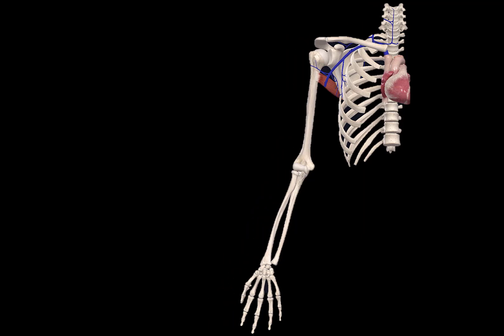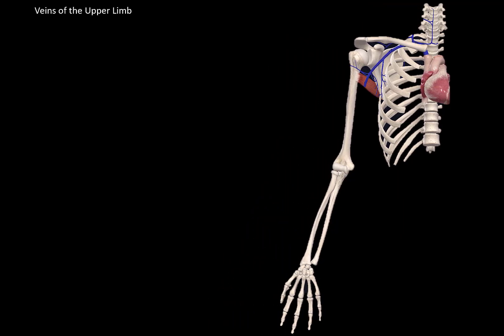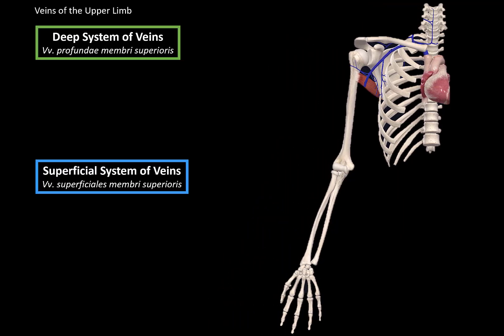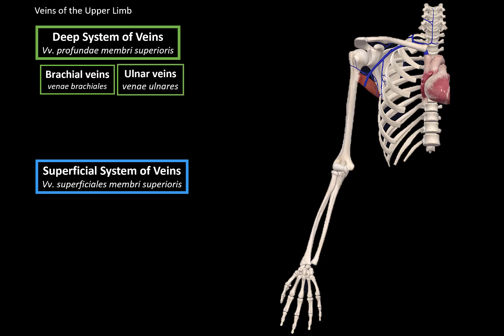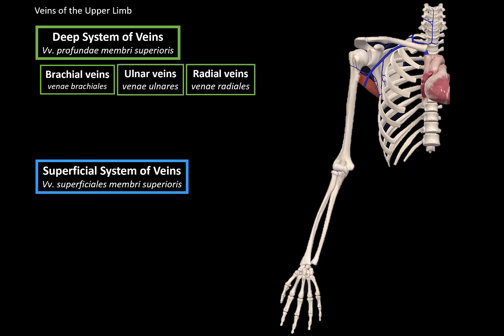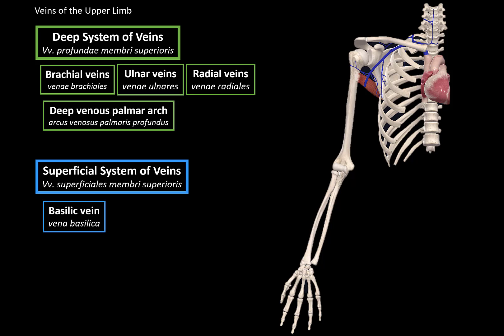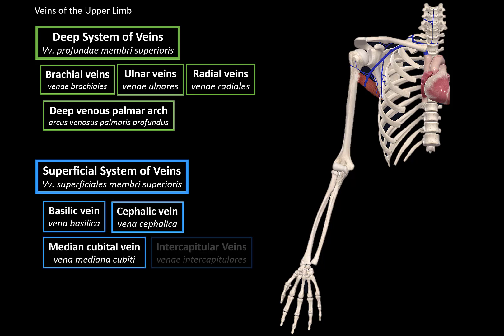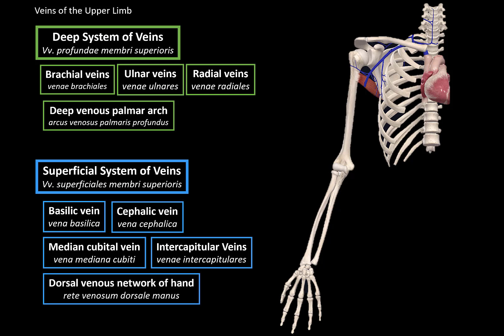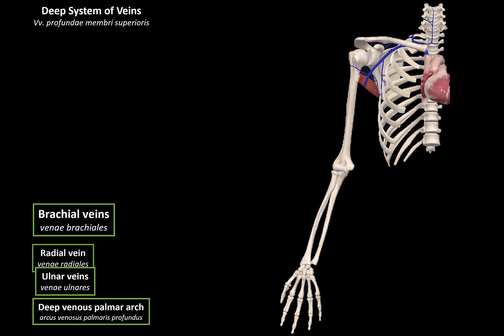The veins of the upper limb form two systems: the deep system of veins and the superficial system of veins. The main deep veins we're going to cover are the brachial veins, ulnar veins, radial veins, and the deep venous palmar arch. The superficial veins we're going to cover are the basilic, cephalic, median cubital, intercapitular, and the dorsal venous network of the hand. Let's now start with the deep system of veins first.